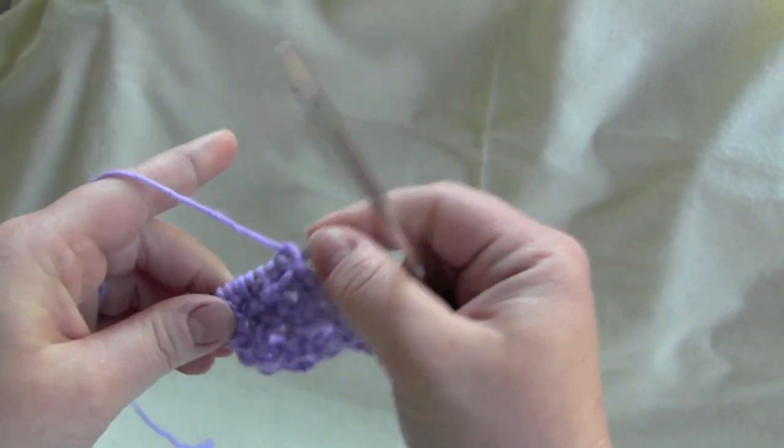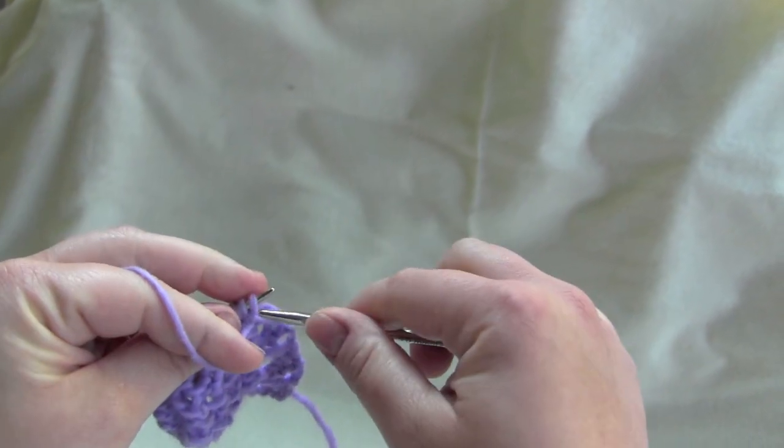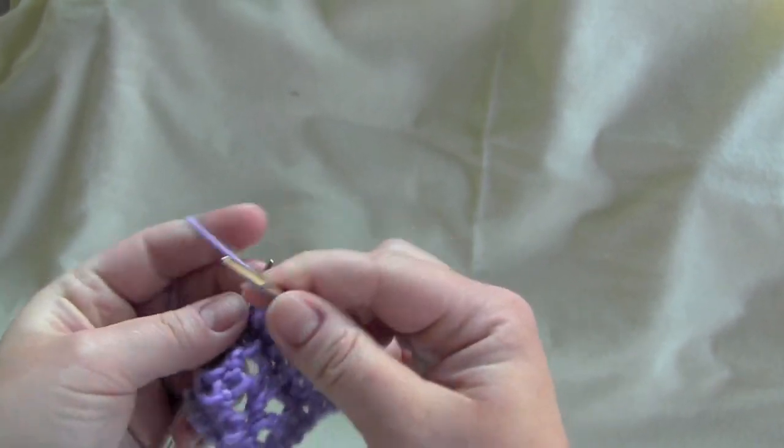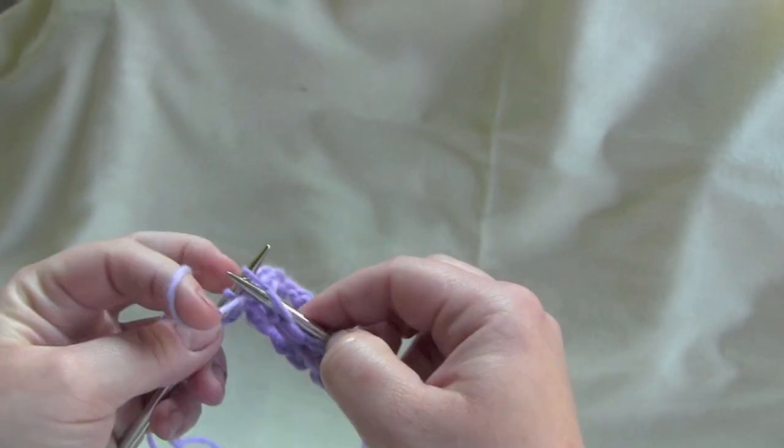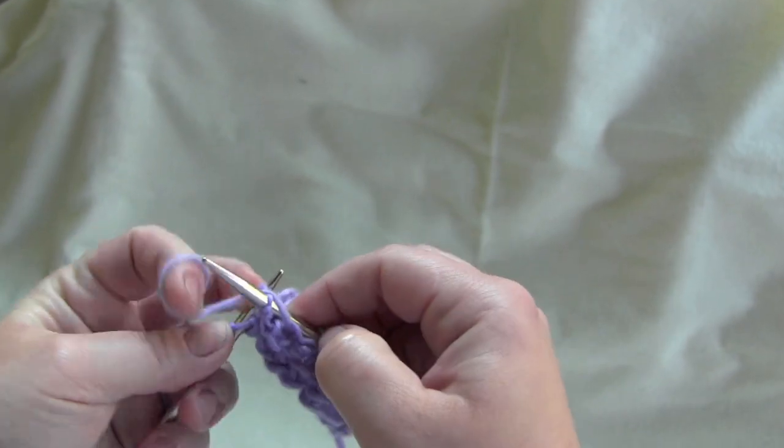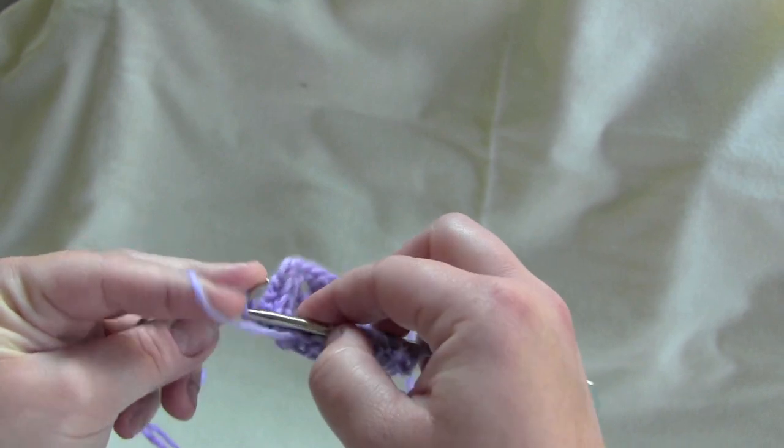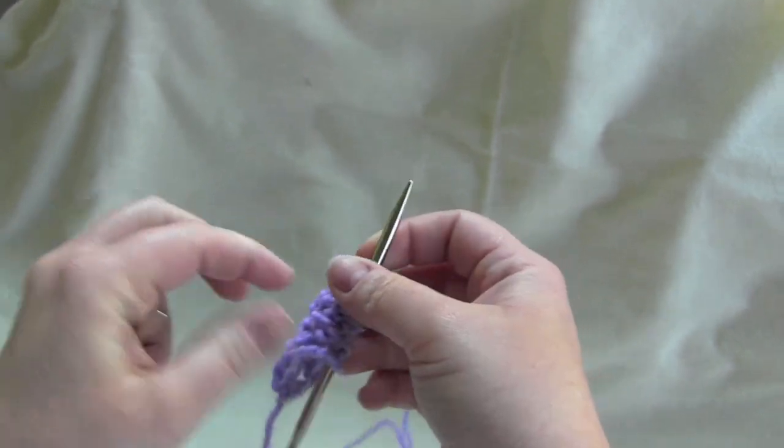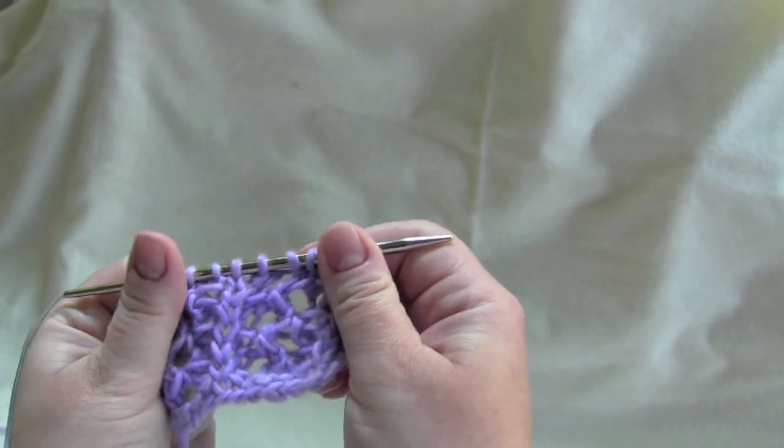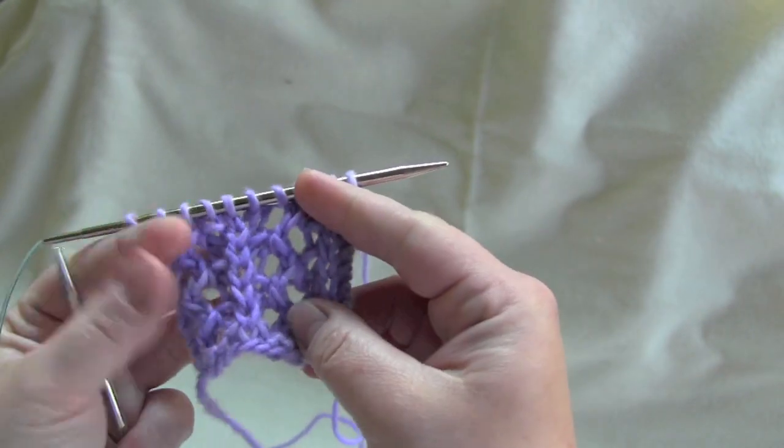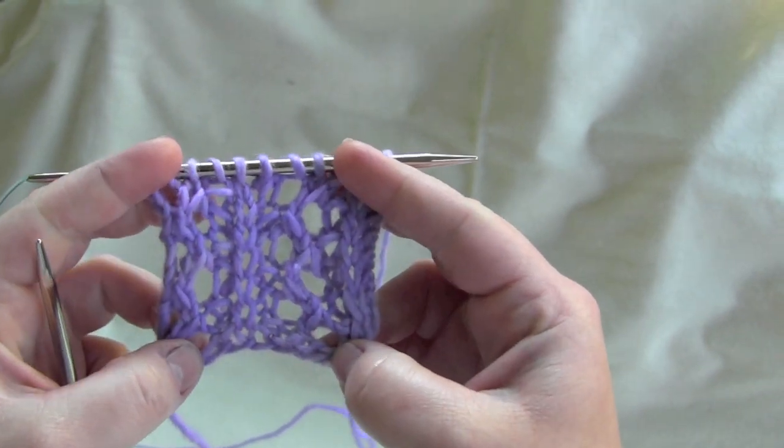And row four, same as row two, purl all stitches. And you just repeat those four rows for the pattern.